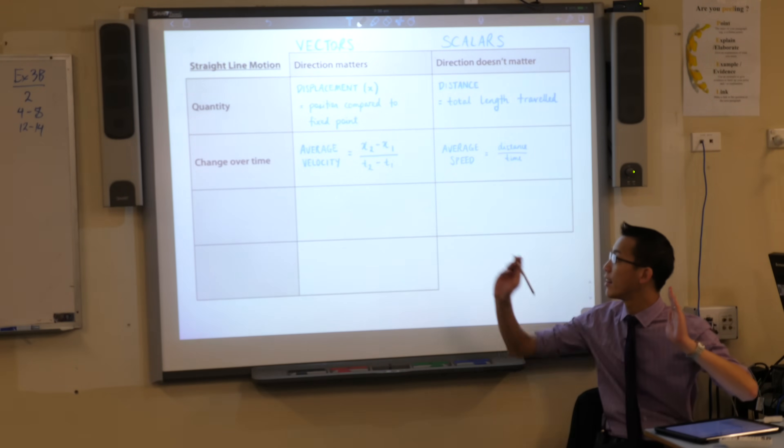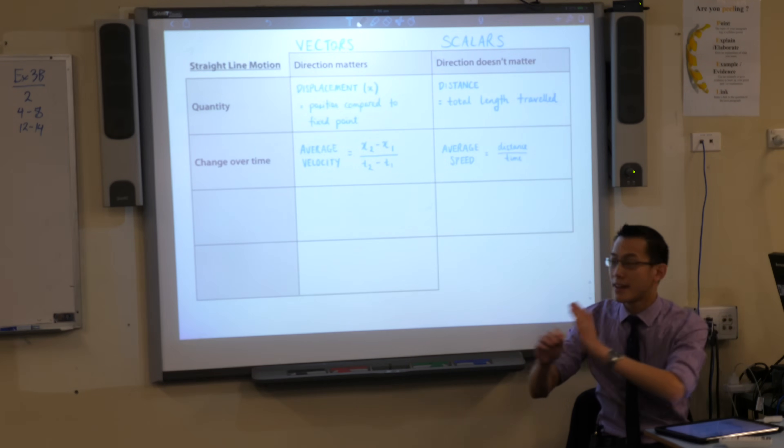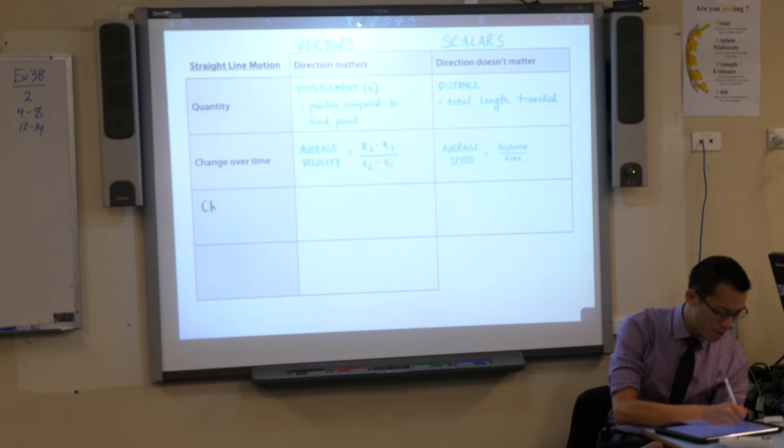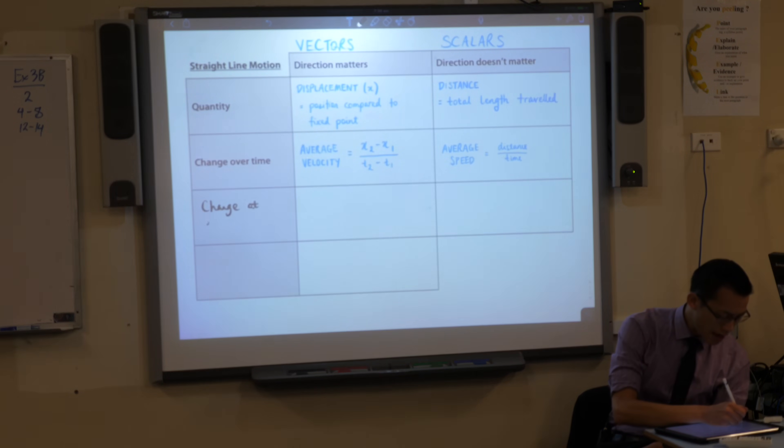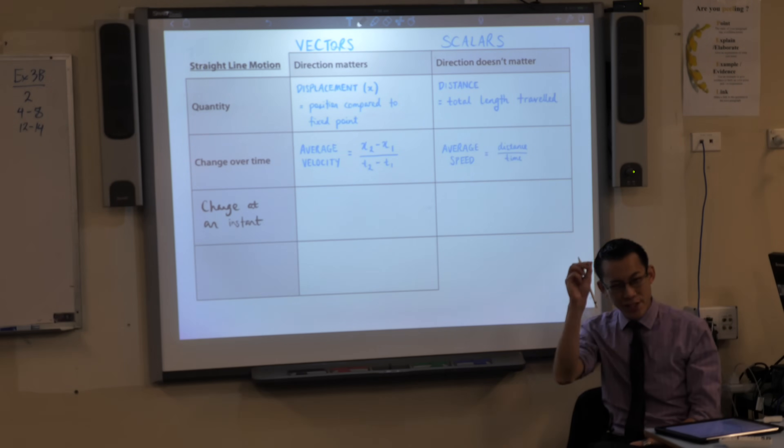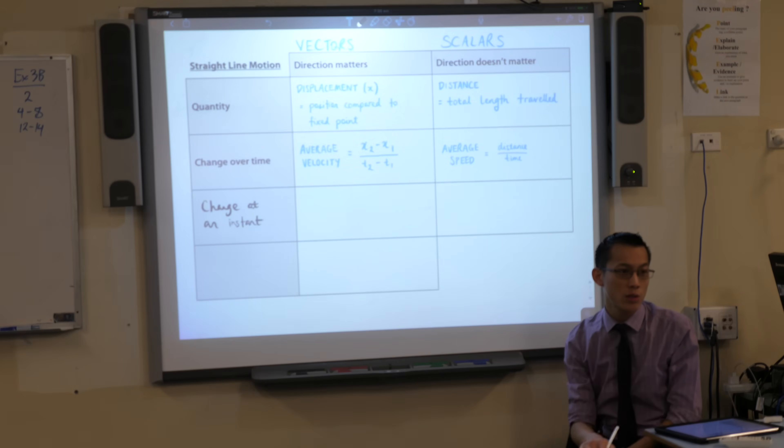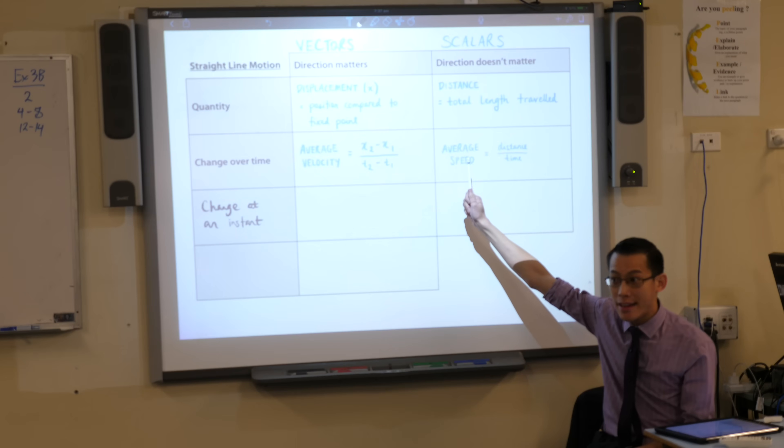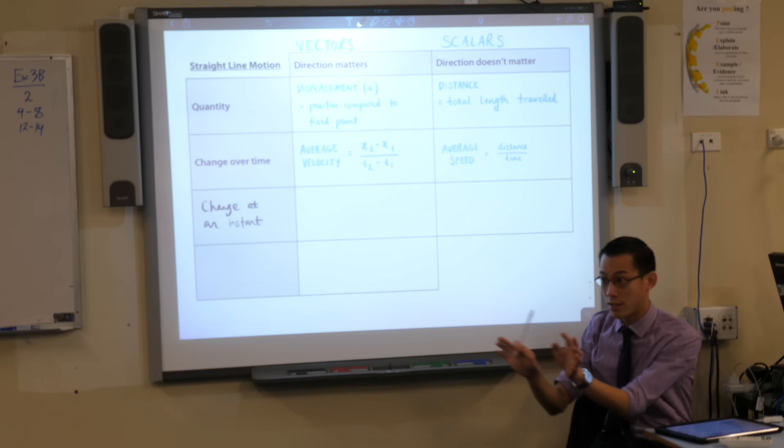Calculus allows us to work out gradient not over an interval but gradient at a point. What that corresponds to in motion terms is we can say not just change over time but change at an instant of time. Because it's change at a single instant in time at a single point, this is also called instantaneous change. This was our last subtopic - it was exponential growth and decay and we had a table just like this where we considered average growth rates and also instantaneous growth rates.